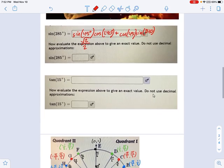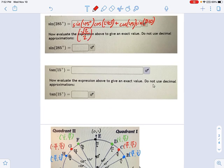So we would say, get that cat off of here. It's going to be radical 2 over 2 times negative 1 half plus cosine of 45. Again, that's radical 2 over 2. And sine of 240 is negative radical 3 over 2.